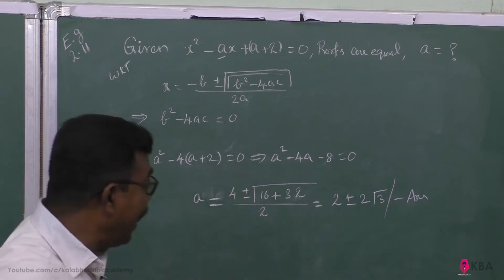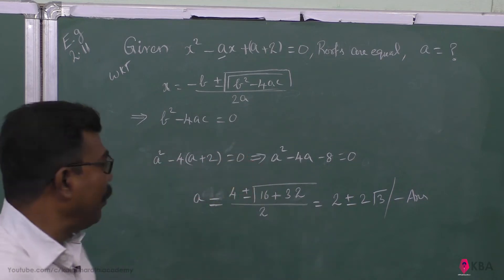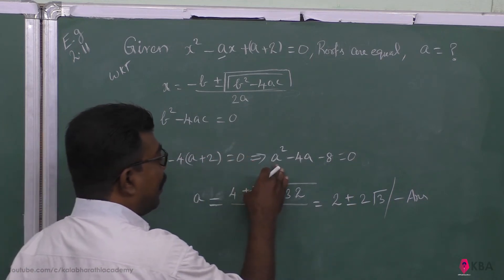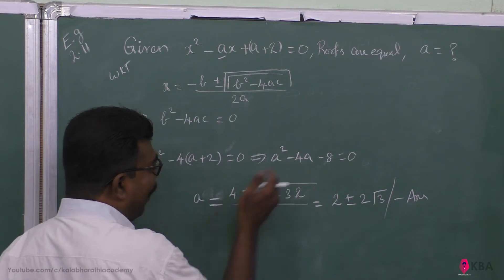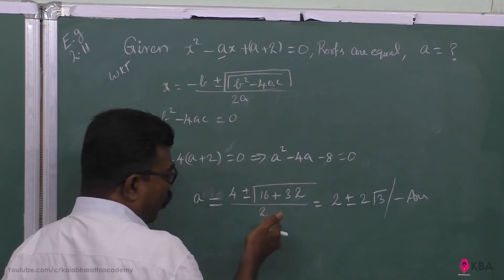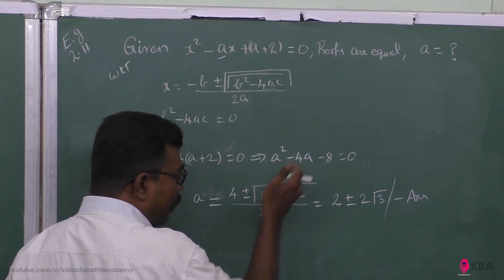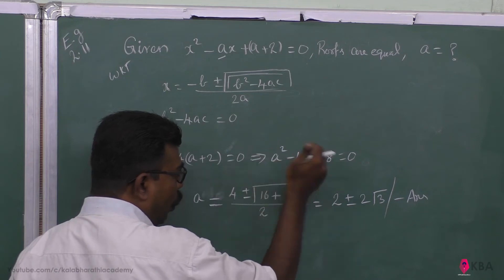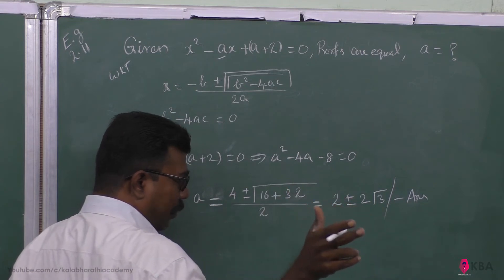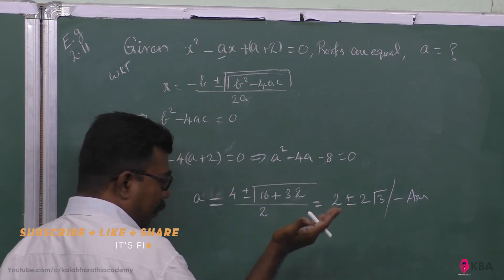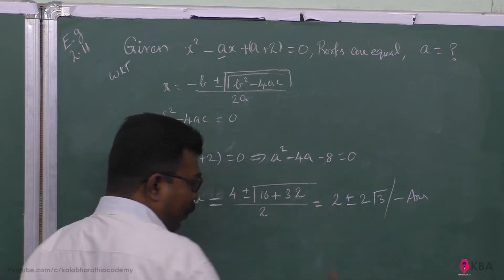இங்க பரச்சினம் முடிஞ்சு போச்சு — இன்மேல் கூடல் கழித்தல் பெருக்கல் வகுத்தல் மட்டும்தான். நம்மல் என்ன equation கடக்குது: a² - 4a - 8 = 0. இதை solve பண்ணீர்னா: a = (4 ± √(16 + 32)) / 2 = (4 ± √48) / 2 = (4 ± 4√3) / 2 = 2 ± 2√3. This is the answer — simple!